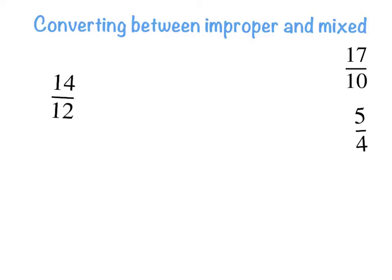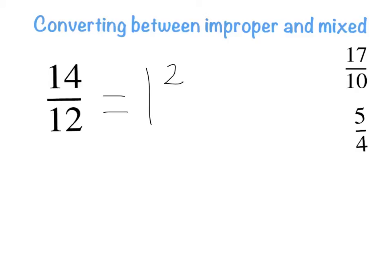Next example: fourteen over twelve. How many times does twelve go into fourteen? Once. How many remaining? Two. So my answer is one and two twelfths. That's how I've converted an improper fraction into a mixed numeral. I won't draw an orange with twelve parts, but that's how you can check if needed.